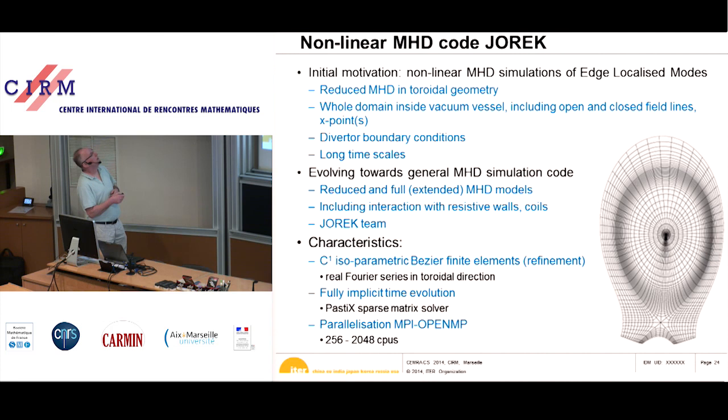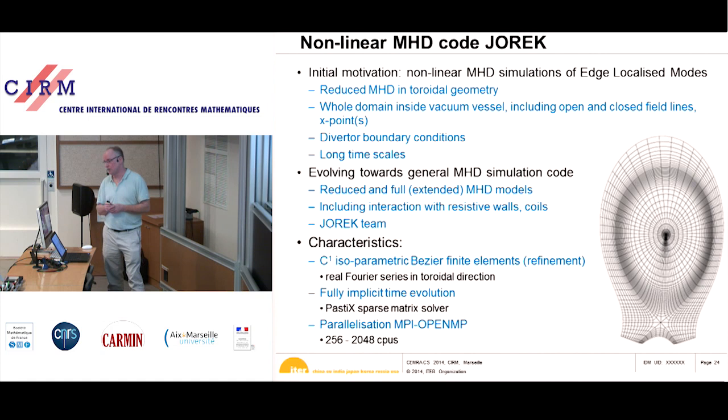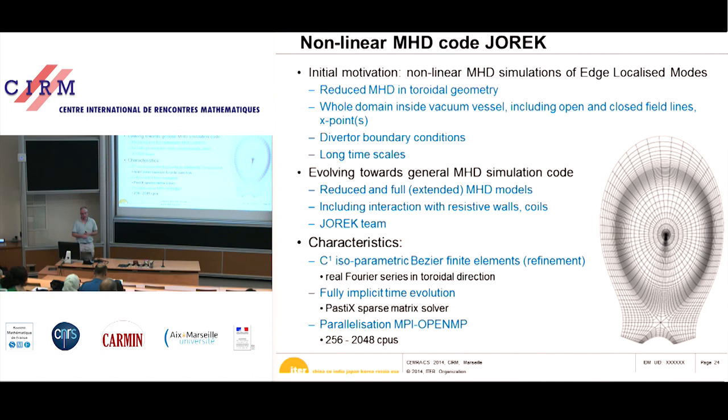Now I come to the code we use, called JOREK. Its initial motivation — about 10 years ago — was the simulation of ELMs. That made requirements: it needs to be in toroidal geometry, accurately describing the plasma shape. What was new at the time is that it includes both open and closed field lines. The particular property of JOREK is that we align the finite elements we use onto the magnetic field structure.